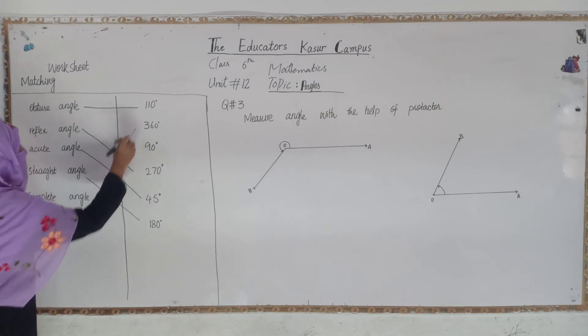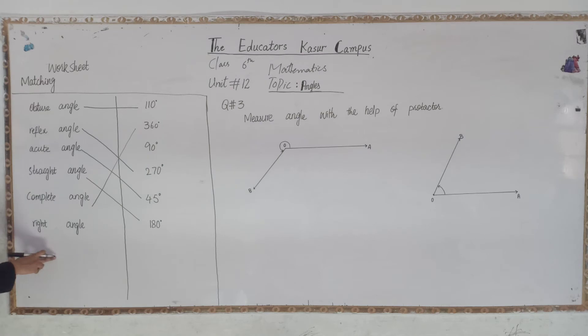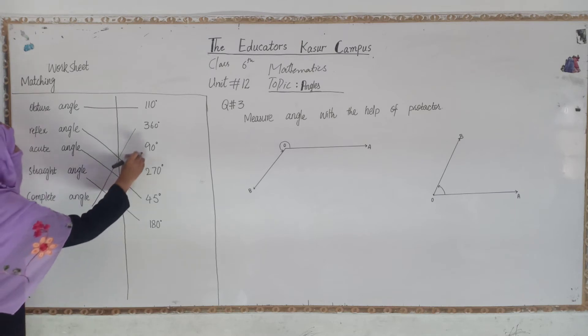Right angle, we are talking about the right angle which is the perpendicular line, which is the right angle. This is always 90 degrees.